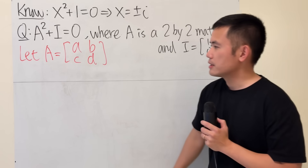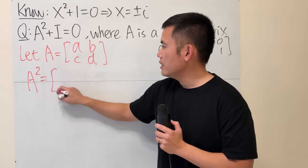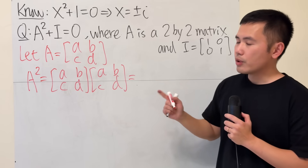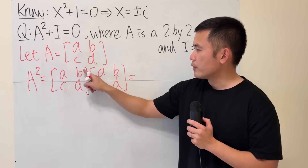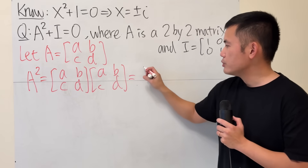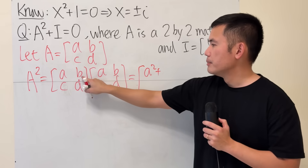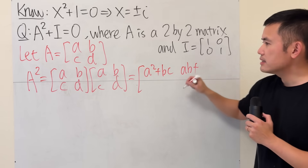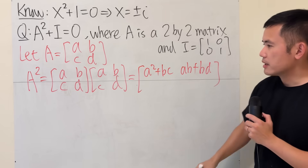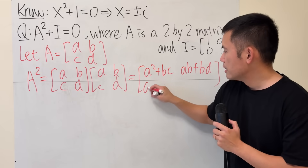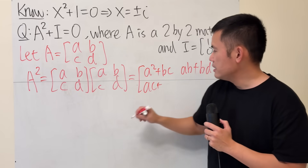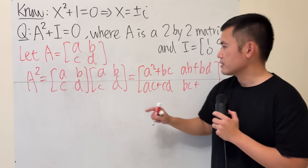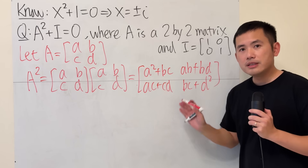I'm going to first figure out what A squared is. A squared is just [a, b; c, d] times itself. To multiply two matrices, we do the dot product of each row with each column. So the result is [a²+bc, ab+bd; ac+cd, bc+d²].